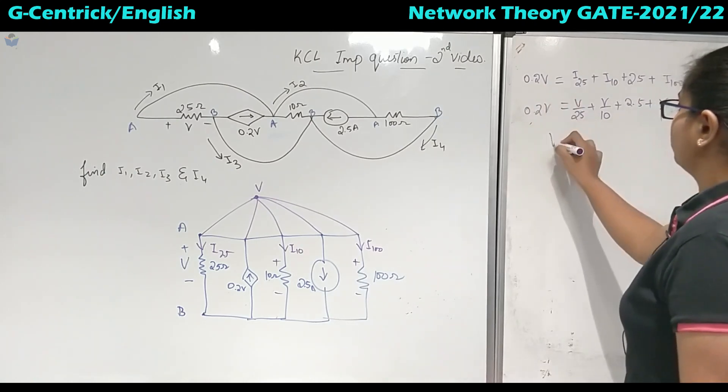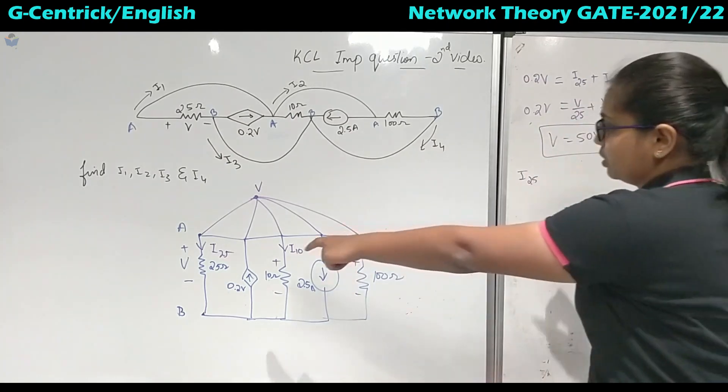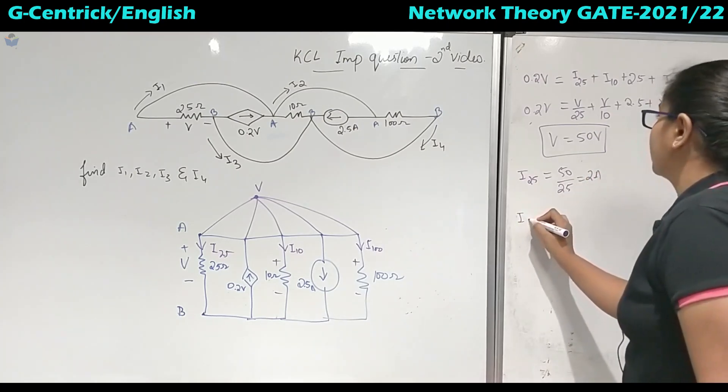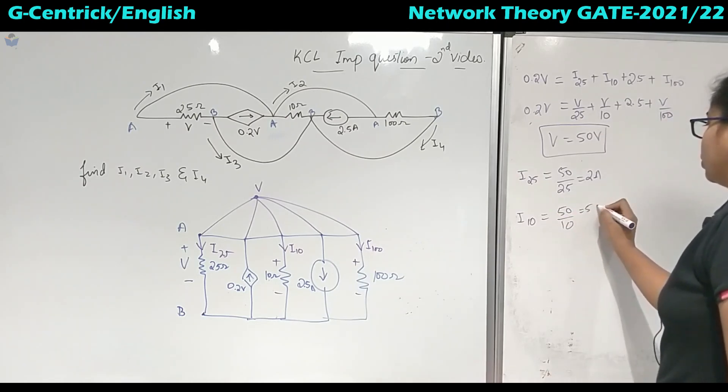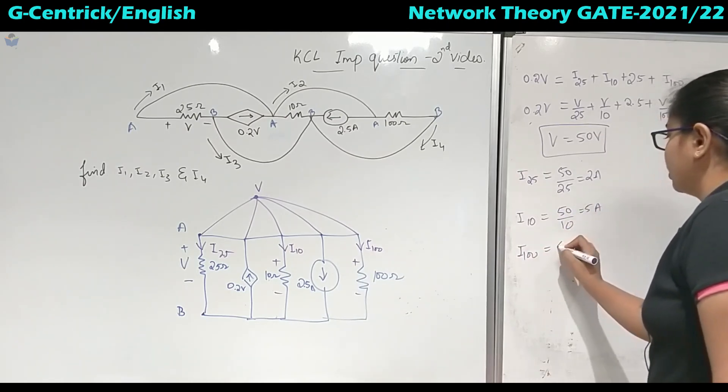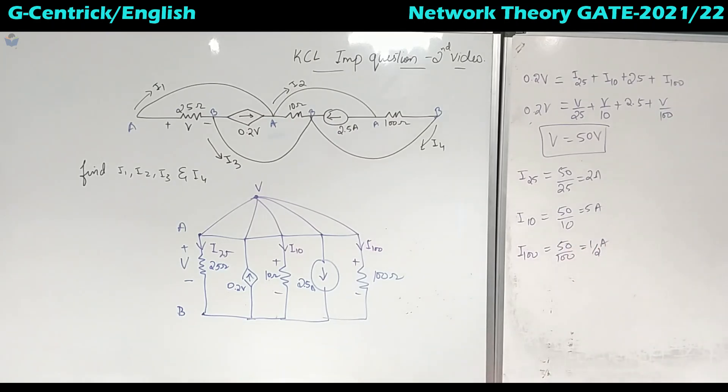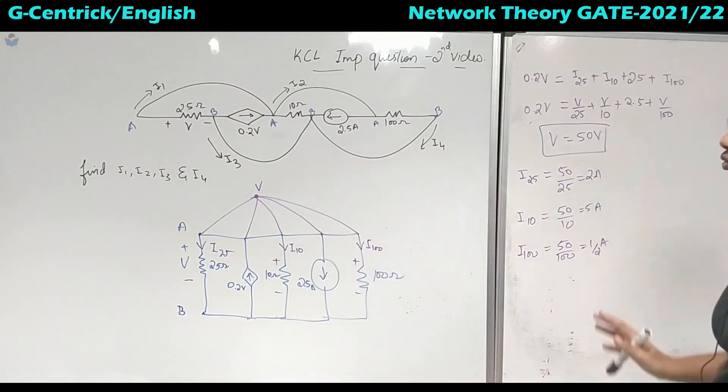So when you solve for V, you will get it as 50 volts. So once you get 50 volts, you can calculate I25 from this branch. So I25 is nothing but V by R, 50 by 25, you will get it as 2 amperes. Then you have I10, 50 upon 10 equal to 5 amperes and I100, 50 by 100, you will get half amperes. So this is what you will get for the circuit after solving for the V. So node voltage is 50 volts.